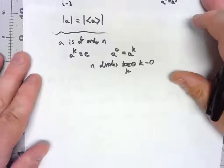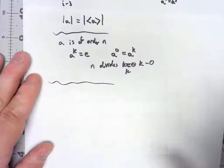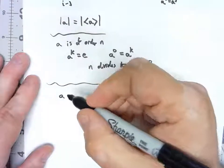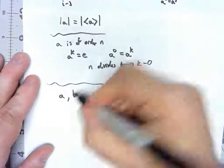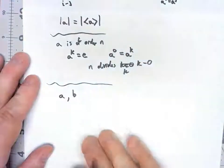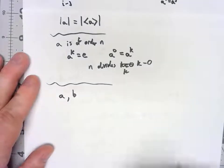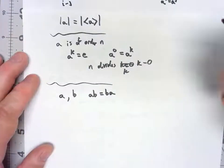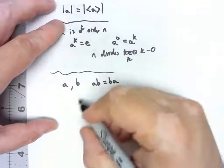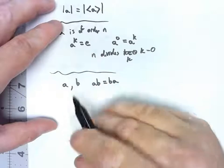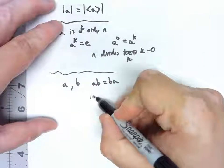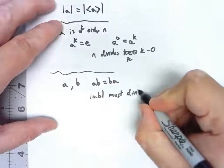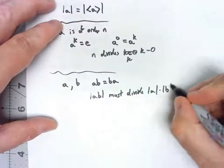One last little consequence. Let's take a look at two different elements of a group — let's say A and B. We don't have to have an abelian group; the whole group doesn't have to commute. But let's say that AB and BA are the same. Then, as a result of that same theorem, the order of AB must divide the order of A times the order of B.